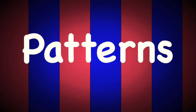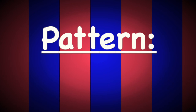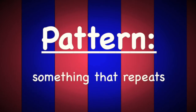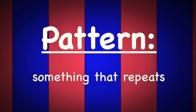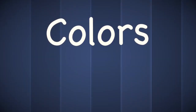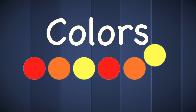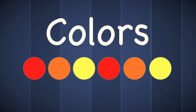Today we're going to be talking about patterns. A pattern is something that repeats. You can see patterns in a few different ways. You can see them in colors, like red, orange, yellow. Red, orange, yellow. And we know that this is a pattern because we can see that red, orange, and yellow repeats.